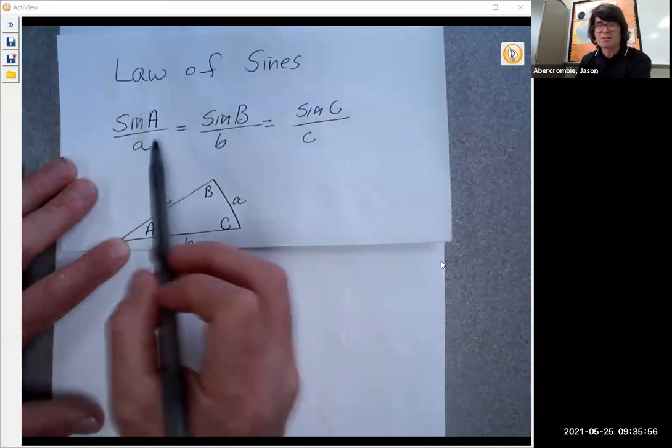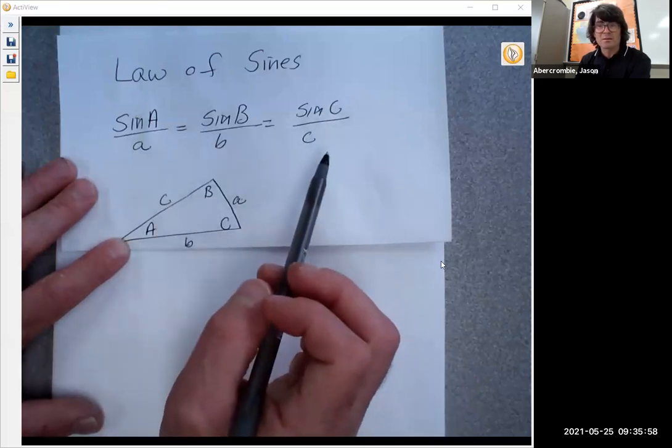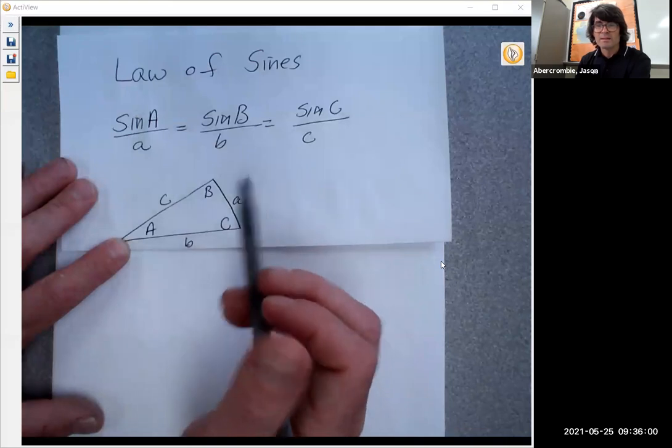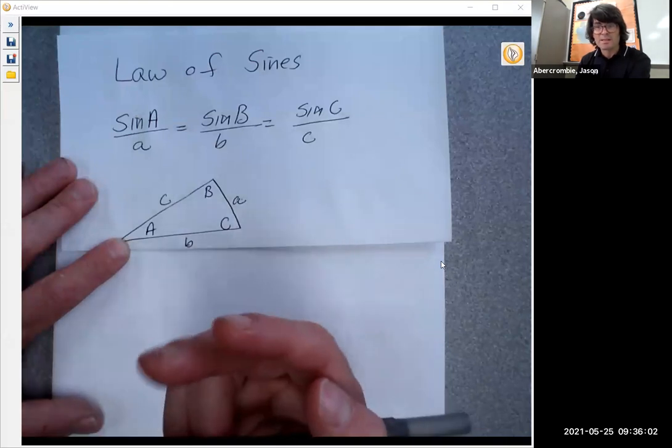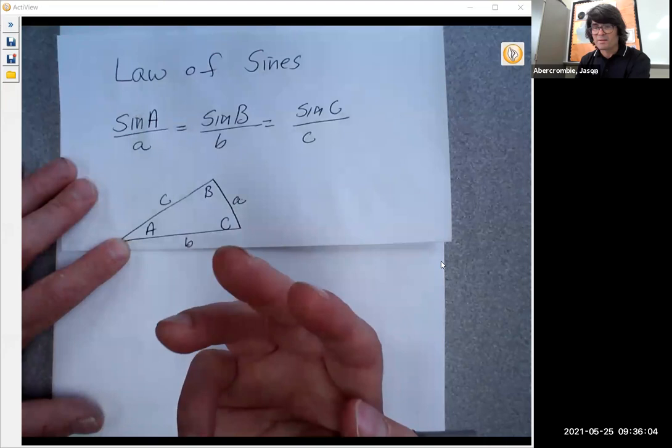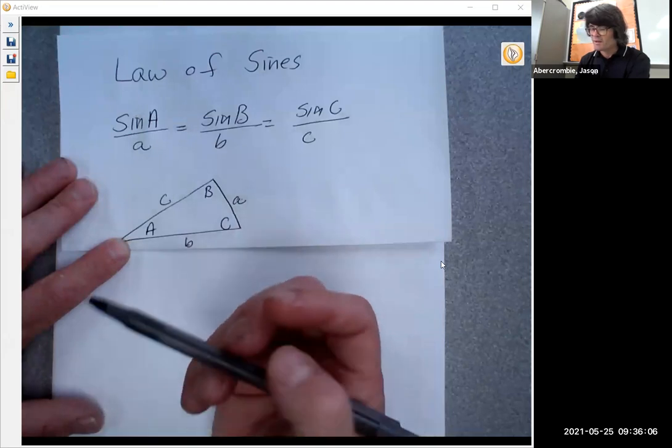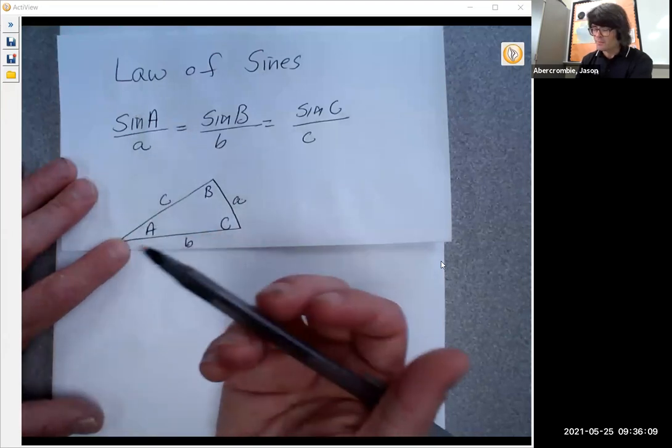So you can basically use any combination of these three terms that are all equal and take either two angles in one side to find the last side or use two sides and one angle to find the other angle.